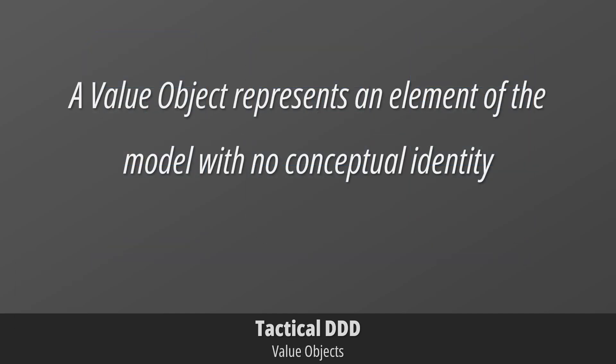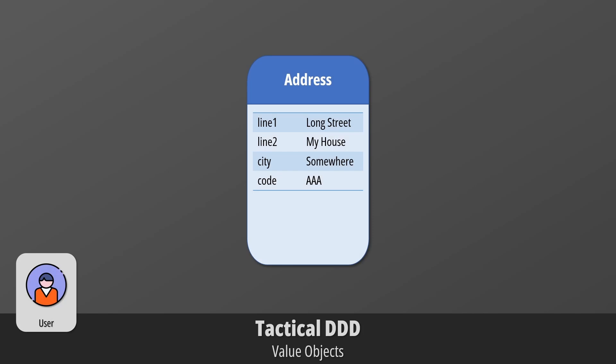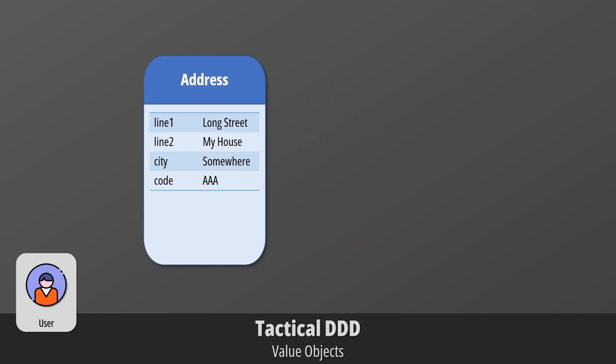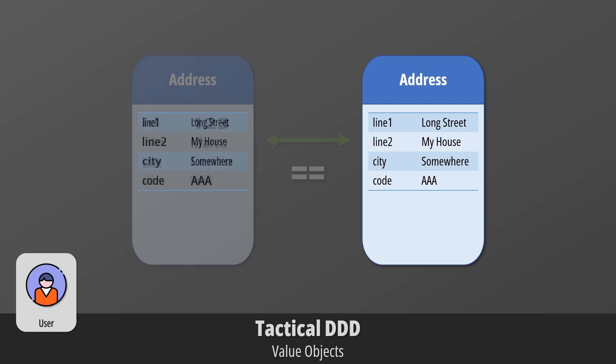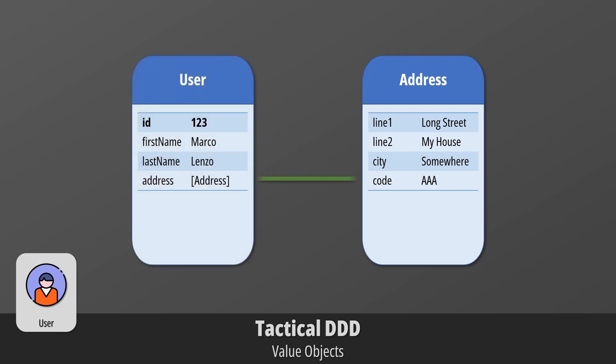A value object represents an element of the model that has no conceptual identity. Two value objects are equal when their properties are equal. Imagine an address defined by these properties — if you have two instances of this class with the same values, those instances are considered equal. Value objects enrich the model with details and are often used with entities to keep them lean. The address could be defined as a property of the user entity; once the user is deleted, the address is deleted with it as well.